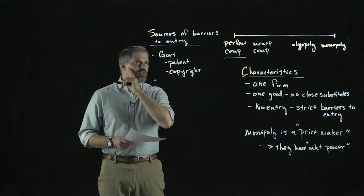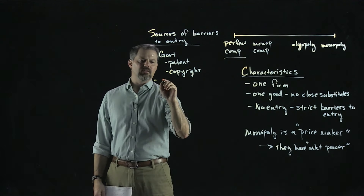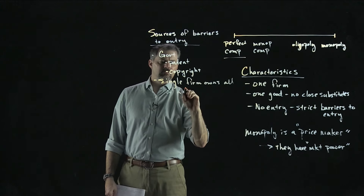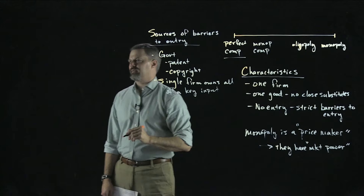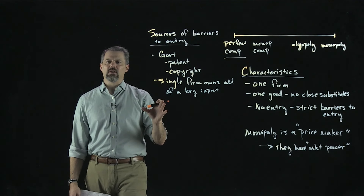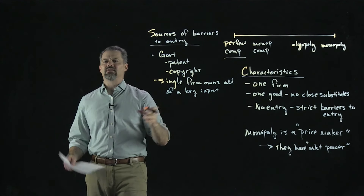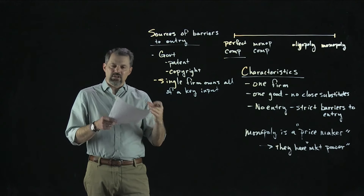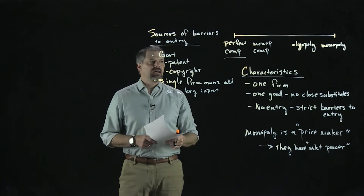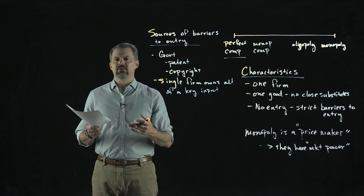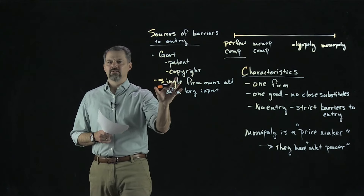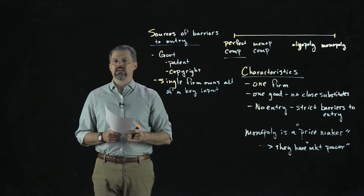Another barrier to entry is when a single firm owns all of the key input. Not really that common, but there are great examples. Alcoa had a monopoly in aluminum production because they had control of all the bauxite—you need bauxite to make aluminum. Another textbook example is De Beers Diamonds. De Beers owns a vast majority of the most productive diamond mines in the world, so for all practical purposes they have a monopoly in the sale of diamonds.